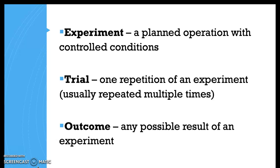The word experiment is a planned operation with controlled conditions. Generally we pick some things of what's going to happen and then we do it. A trial is a repetition of that experiment. Usually we have multiple trials because we want to make sure things happen the same over and over so we can prove that it works or it doesn't work. An outcome is any possible result of an experiment.